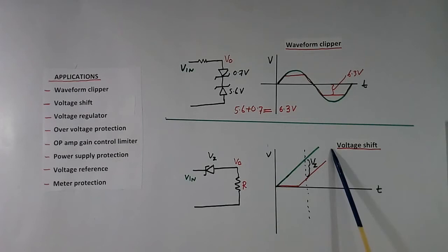Then here Zener application in voltage shift. This is voltage, this is time. Green color is input voltage. This voltage will be always less than this, equal to this drop. Suppose at this point, input voltage is this. Output voltage will be this voltage minus this Zener diode drop, so we get this.